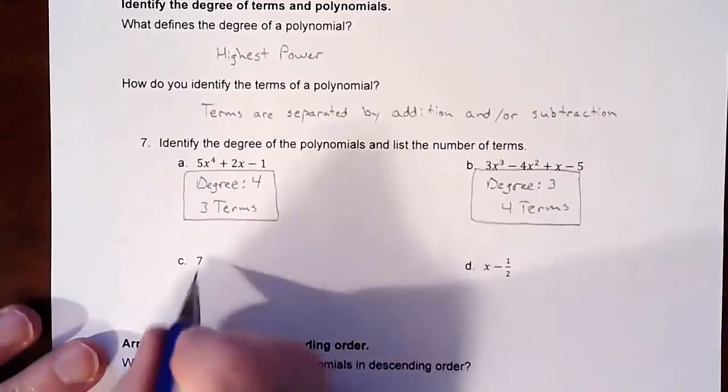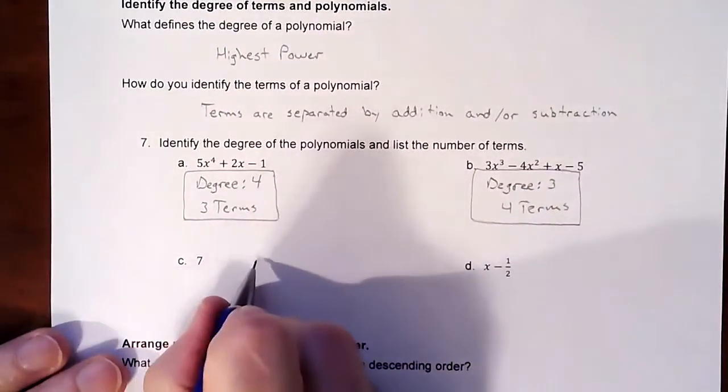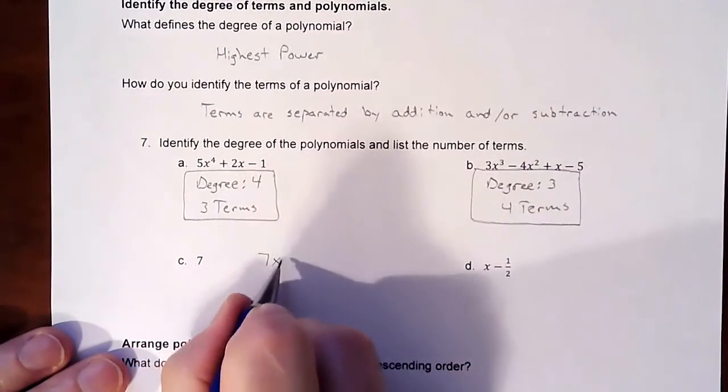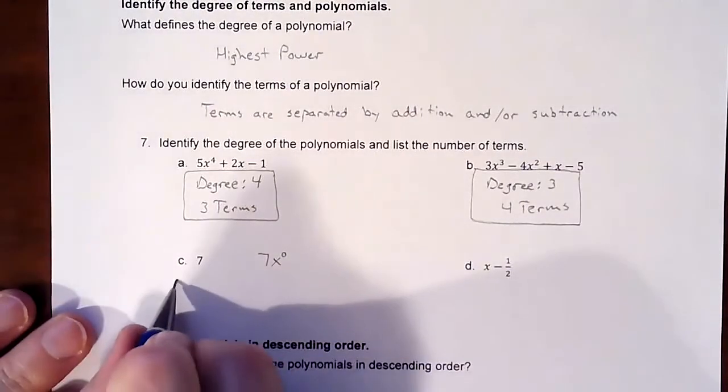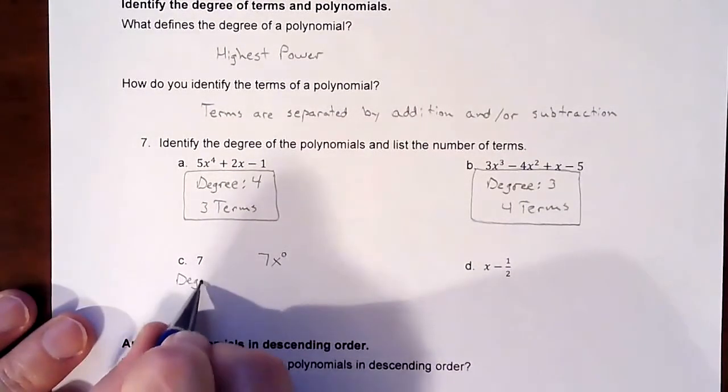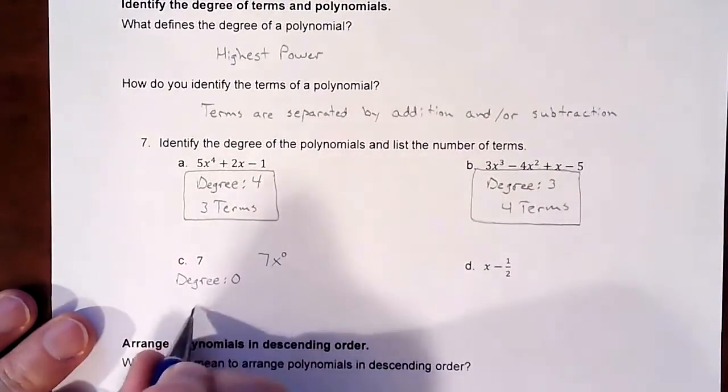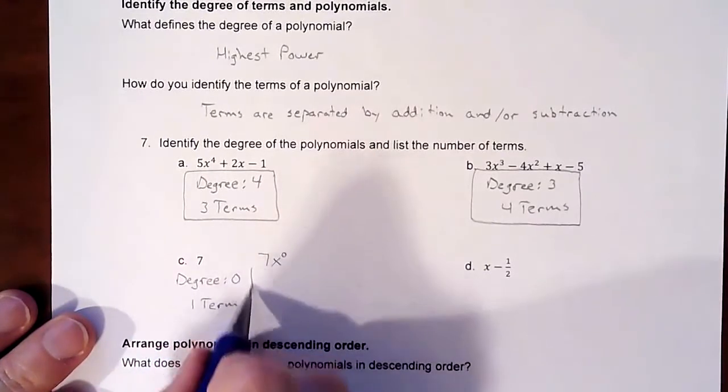This is tricky. This is a degree of zero. If you had a variable on it, it would have to have a degree of zero on it. So your degree on that is zero and there's just one term, which is known as a monomial.